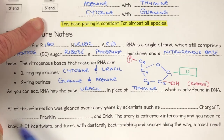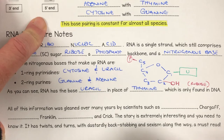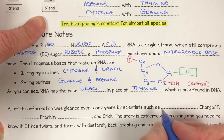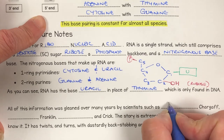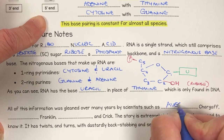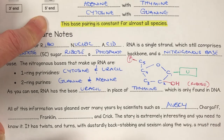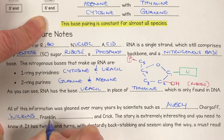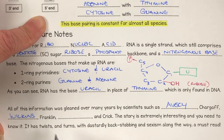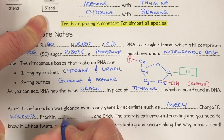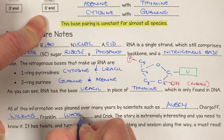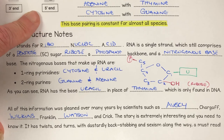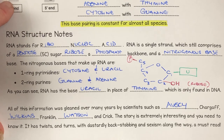All of this was worked out over many years by some famous scientists you should learn about — there's another video on that. They are Avery, Chargaff, Wilkins, Franklin — who in all of this was the victim — and finally Watson and Crick. It's a super interesting story with lots of intrigue and theft and all sorts of stuff.